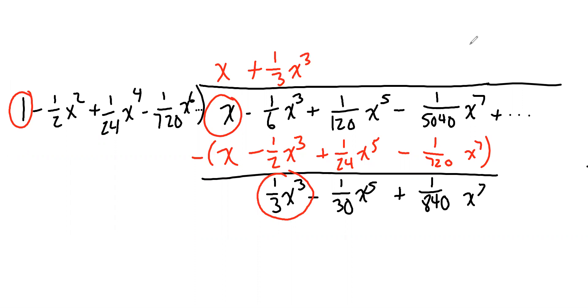And now let's do the distributing. Times 1 is 1/3 x cubed. 1/3 x cubed times negative 1/2 x squared is negative. 1/2 times 1/3 is 1/6. x squared times x cubed is x to the fifth. On the next term, positive times positive is positive. 1/3 times 1 over 24 is 1 over 72. x cubed times x to the fourth is x to the seventh. Then we subtract.